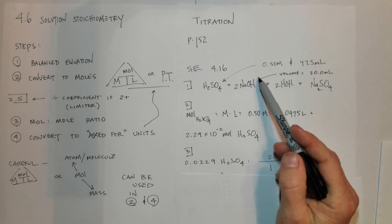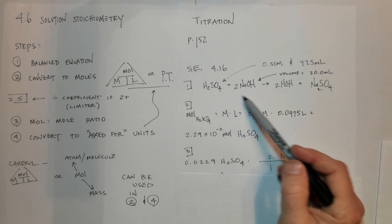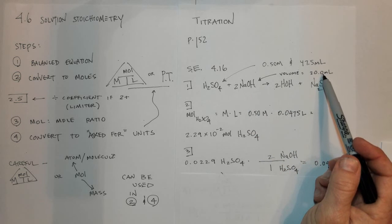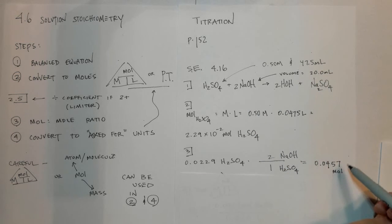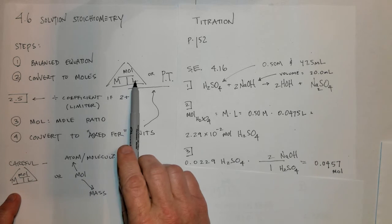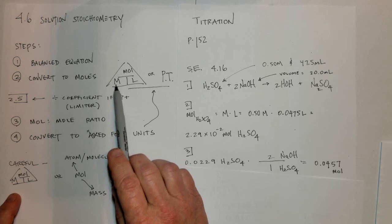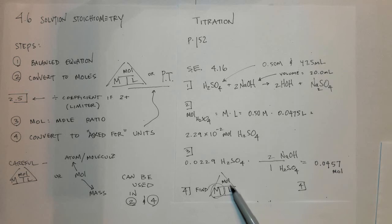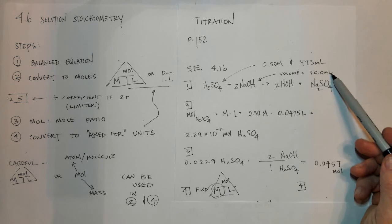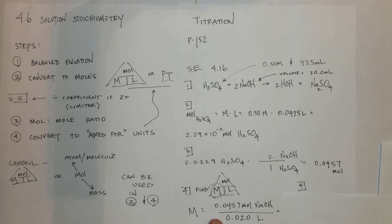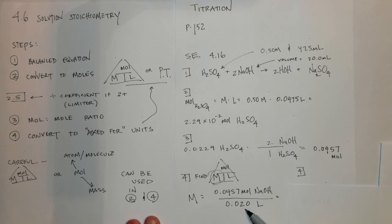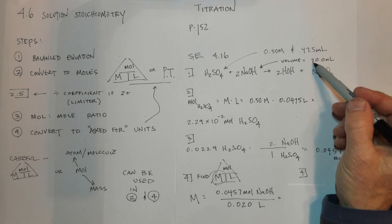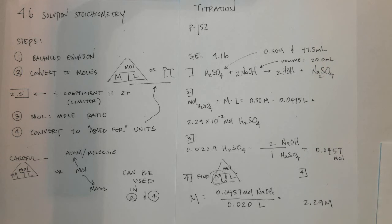Our goal in a titration is to determine the concentration of the unknown substance. Since we're given the volume of NaOH (20 milliliters, or 0.02 liters) and we know the number of moles of NaOH (0.0475), we can find the molarity. Dividing 0.0475 moles by 0.02 liters gives a 2.29 molar solution.